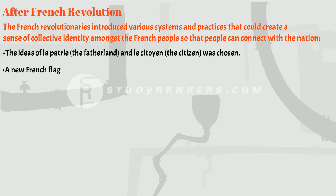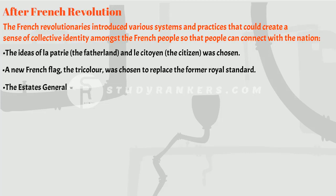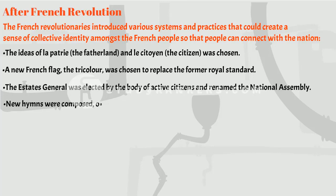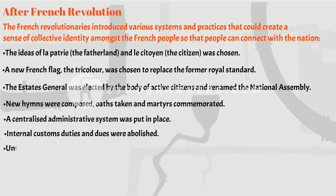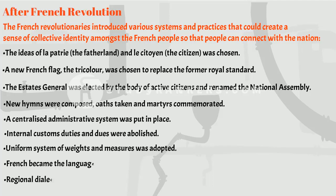A new French flag, the tricolor, was chosen to replace the former royal standard. The Estates General was elected by the body of active citizens and renamed the National Assembly. New hymns were composed, oaths taken, and martyrs commemorated — all in the name of the nation. A centralized administrative system was put in place. Internal customs duties were abolished, a uniform system of weights and measures was adopted, and French became the language of the nation while regional dialects were discouraged.